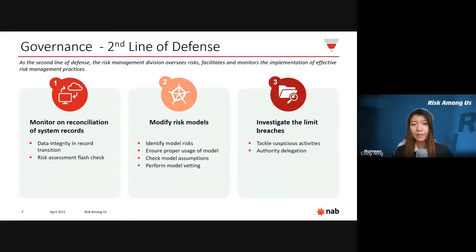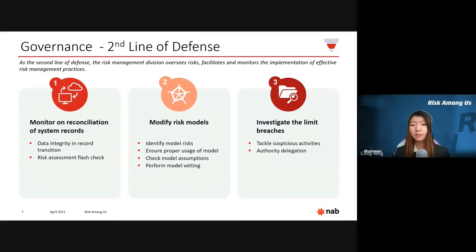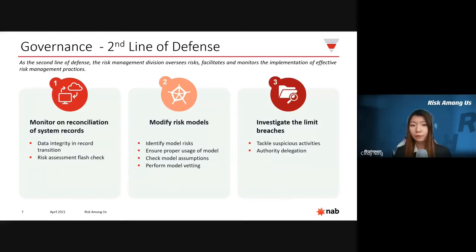Moving on to the second line of defense, represented by the Risk Management and Compliance Division, whose responsibility is to oversee risk and monitor the effectiveness of risk management practices done by the first line. Relevant controls include risk managers monitoring the consistency of transaction records to ensure data integrity, conducting flash checks to catch misconduct in a timely manner. Additionally, the bank should revisit their models to identify issues — verifying the model is properly used, ensuring model assumptions are met, and regularly performing model vetting to check validity. Limit breaches must be investigated thoroughly as they occur to tackle suspicious activities in a timely manner.